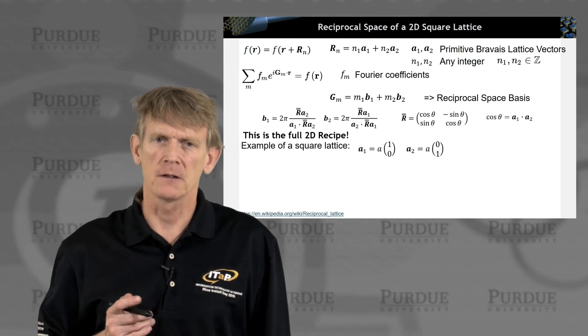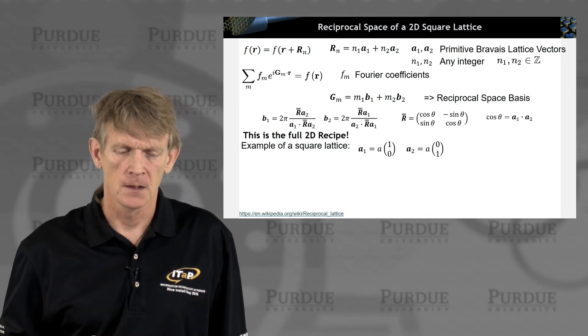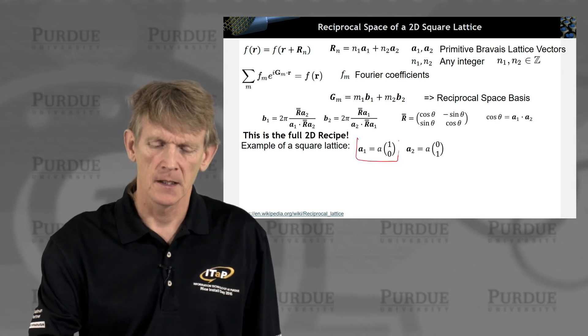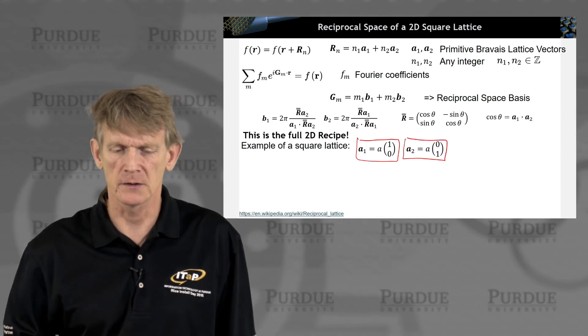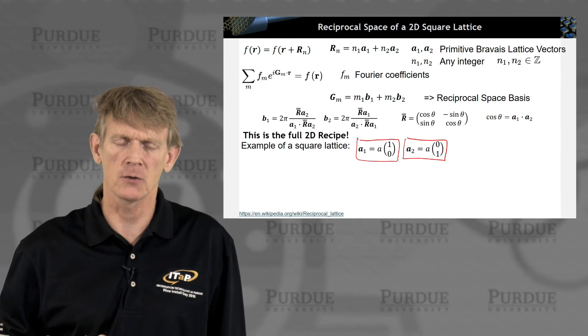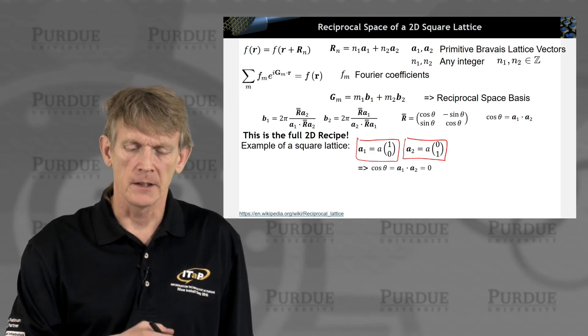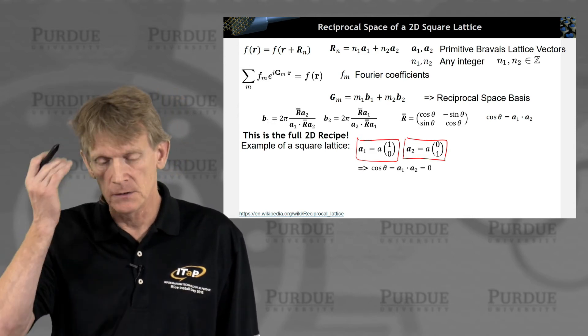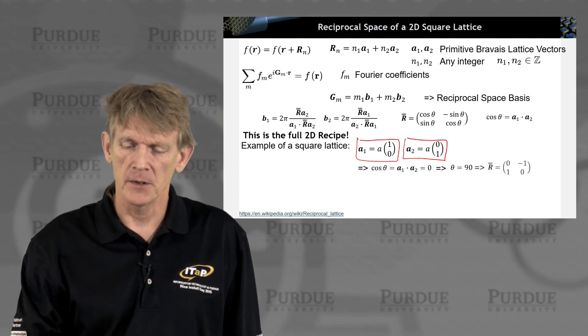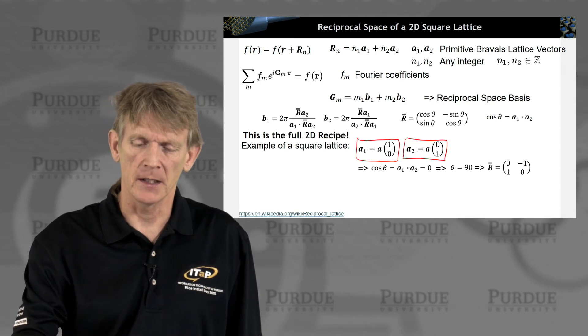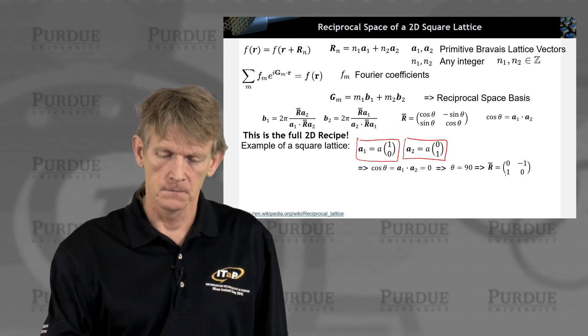Here is the full recipe. Let's make this a little bit more concrete on a simple square lattice, which is the simplest of all of these examples. So let's choose a1 being a times x and a2 is a times y, if you like the x and y notation of a Cartesian coordinate. Or in the vector notation here, it's (1,0) and (0,1). The cosine θ of a1 dot a2 is 0. That means θ is 90 degrees. And that means the rotation matrix as cosine -sine, sine cosine becomes 0 -1, 1 0.